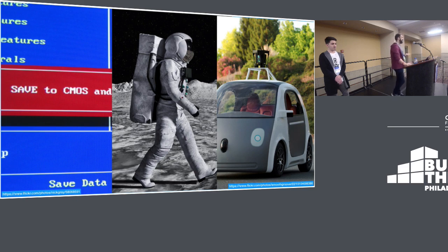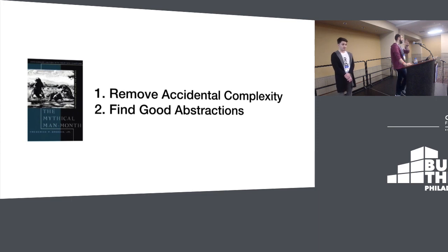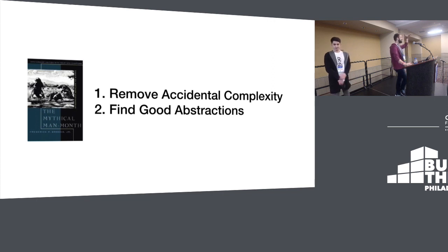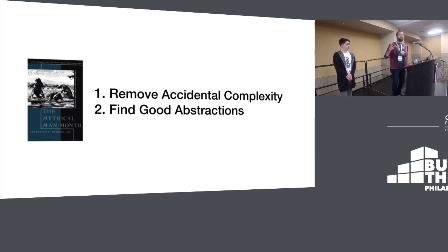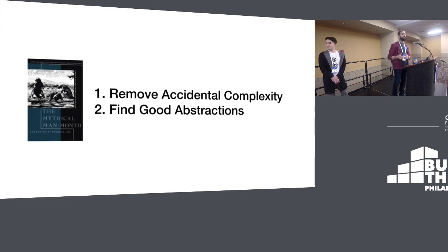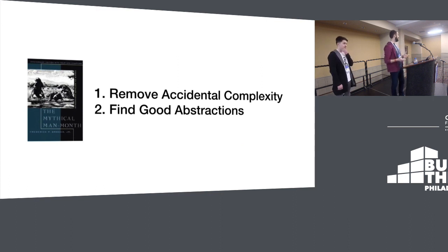There's basically two things that have ever worked, and we've known them since 1983-ish in the Mythical Man Month. It's finding good abstractions, finding high-level abstractions - you couldn't build a driverless car in assembly language, you have to find higher and higher level abstractions. And removing accidental complexity: there's essential complexity, the complexity of the problem itself, and accidental complexity, the stuff we do to ourselves. If we can remove the accidental complexity, we can focus on the actual complexity and build better and better things.